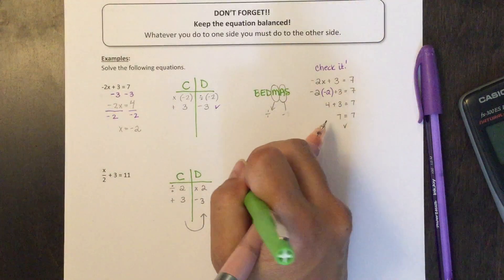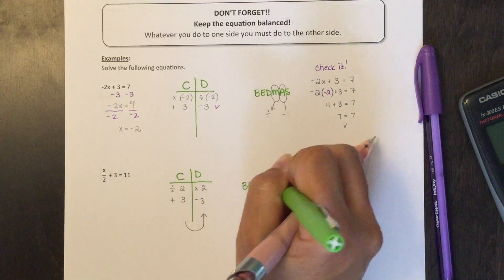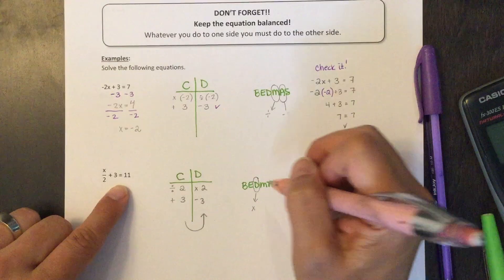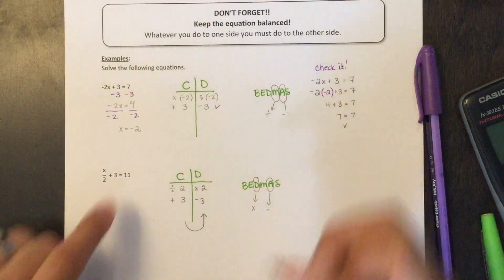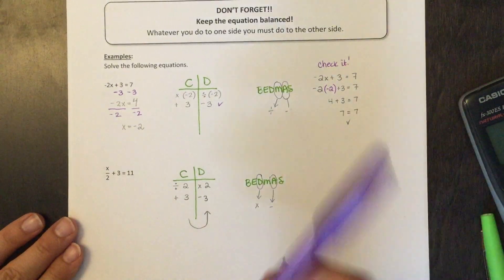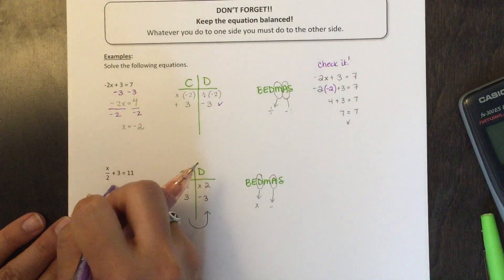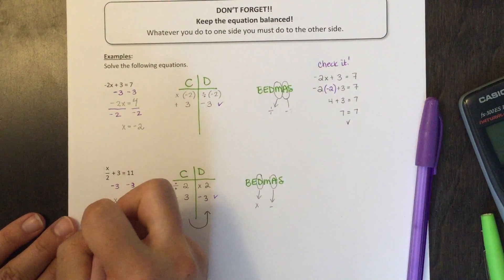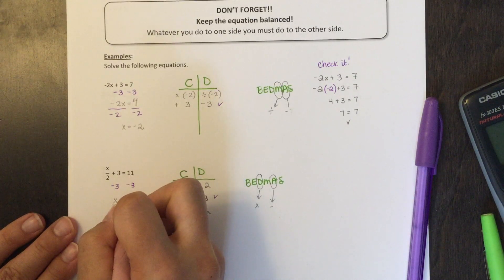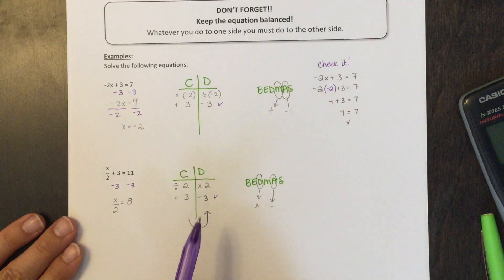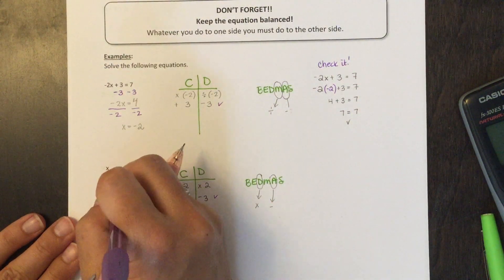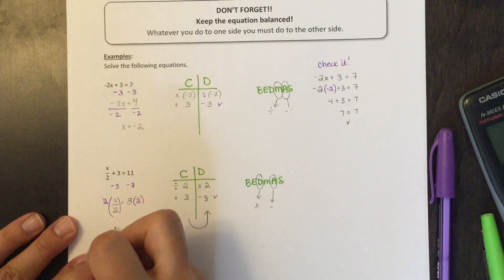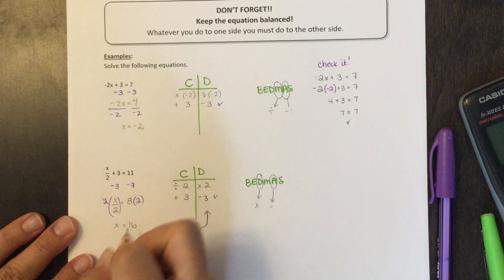So it was set up like this, and I'm going to start at the bottom and work my way up. Or if I wrote out BEDMAS — I can see I have division so I'm going to want to do multiplication, and I have addition so I'm going to want to do subtraction. So first I'm going to subtract three from both sides. Now I have x divided by two equals eight. Then I'm going to multiply both sides by two — the twos cancel out and I'm left with x equals 16.